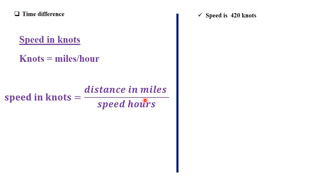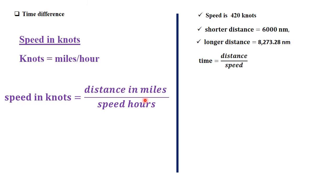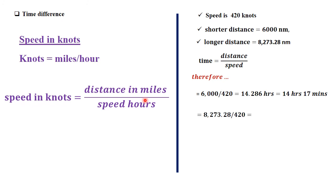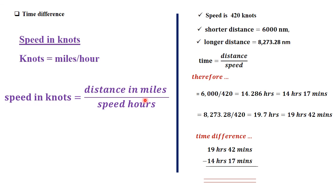We are told the speed is 420 knots. The shorter distance was 6600 nautical miles and the longer one was 8273.228 nautical miles. Time equals distance divided by speed. For the shorter route: 6600 divided by 420 equals 14.286 hours, which is 14 hours and 17 minutes. For the longer route: 8273.28 divided by 420 equals 19.7 hours, which is 19 hours and 42 minutes. The time difference is 19 hours 42 minutes minus 14 hours 17 minutes, giving 5 hours and 25 minutes.